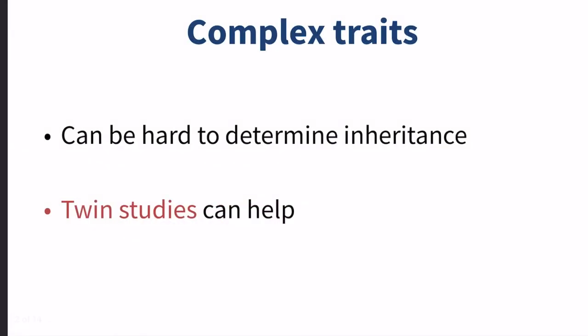Complex traits can be really hard to determine whether they are genetic, whether they have a genetic component, or whether they don't. Some examples of this are a lot of those topics many of you chose for your disease research paper. Some of these have genetic components to them; some can arise from different environmental factors. But we're going to talk about how scientists can figure out whether a trait has a genetic component, and what they can use are twin studies.